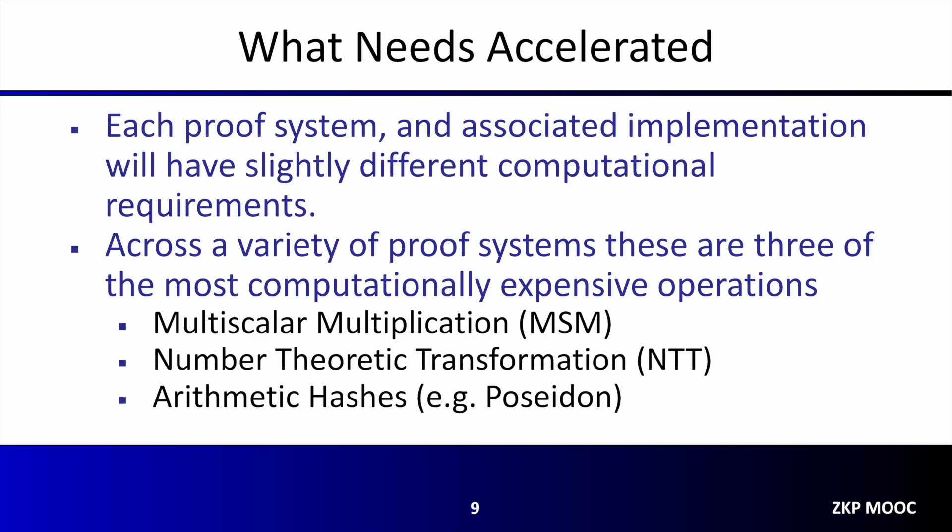With that said, across a variety of different proof systems there are three computationally expensive operations which are seen repeatedly: multi-scalar multiplication, number-theoretic transformation, and arithmetic hashes. In the coming slides we'll discuss each of these in more detail, describing what they are and how they are commonly implemented.